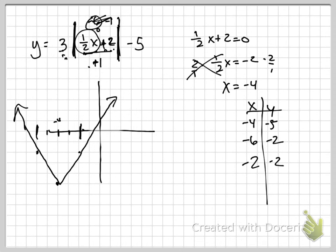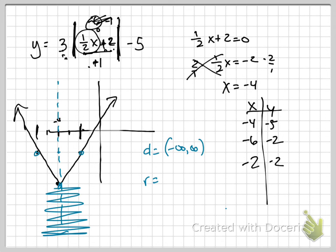Domain is still negative infinity to positive infinity. Range: what's the first y value I come to? Negative 5, including negative 5, and it goes all the way up to infinity.